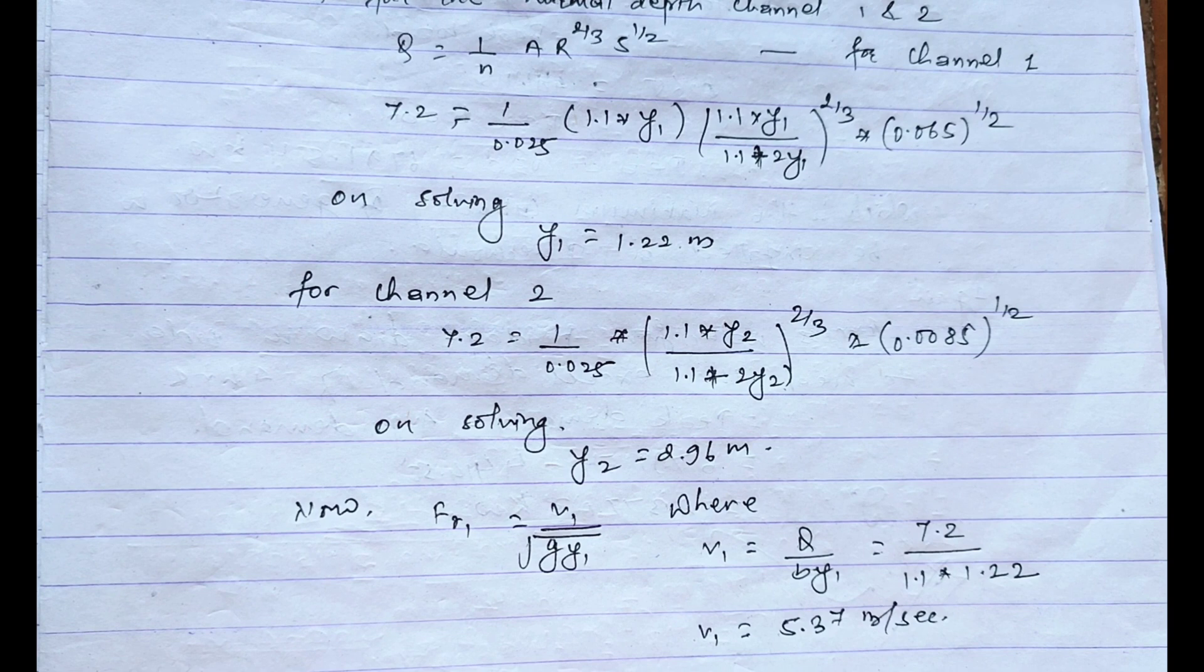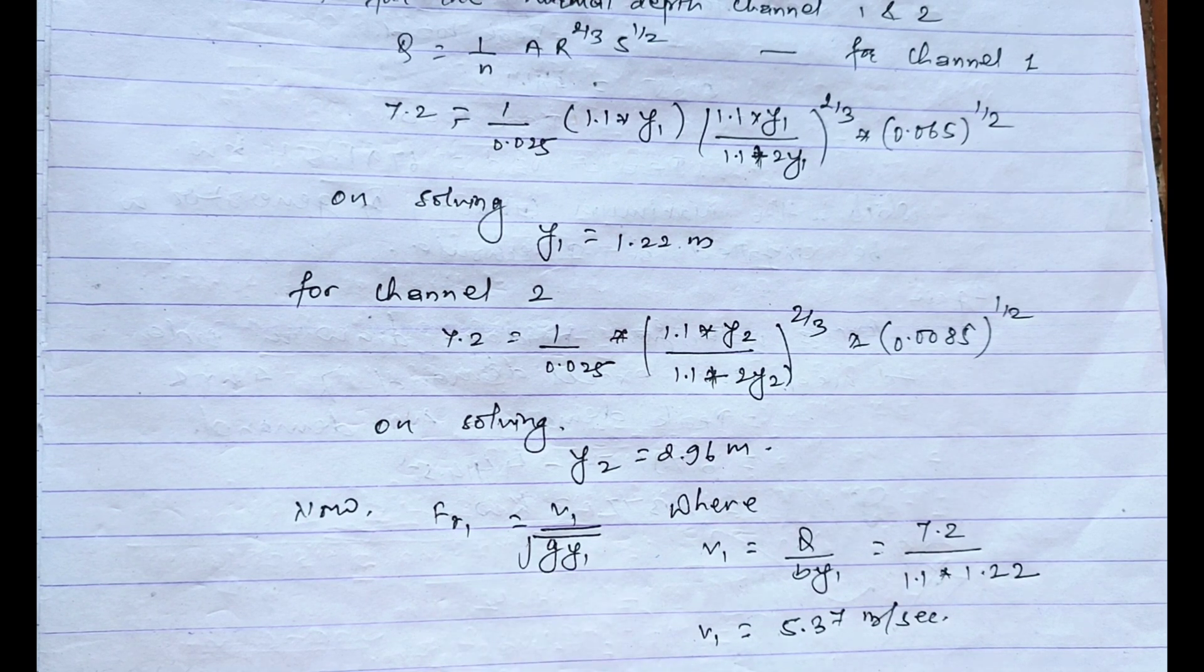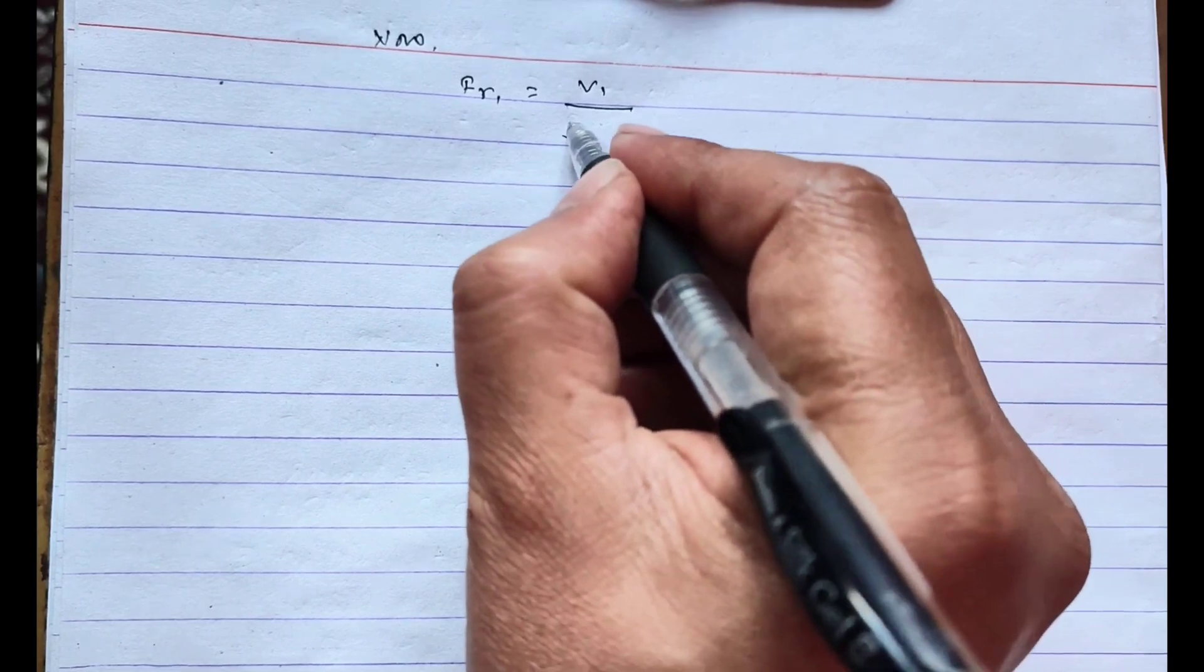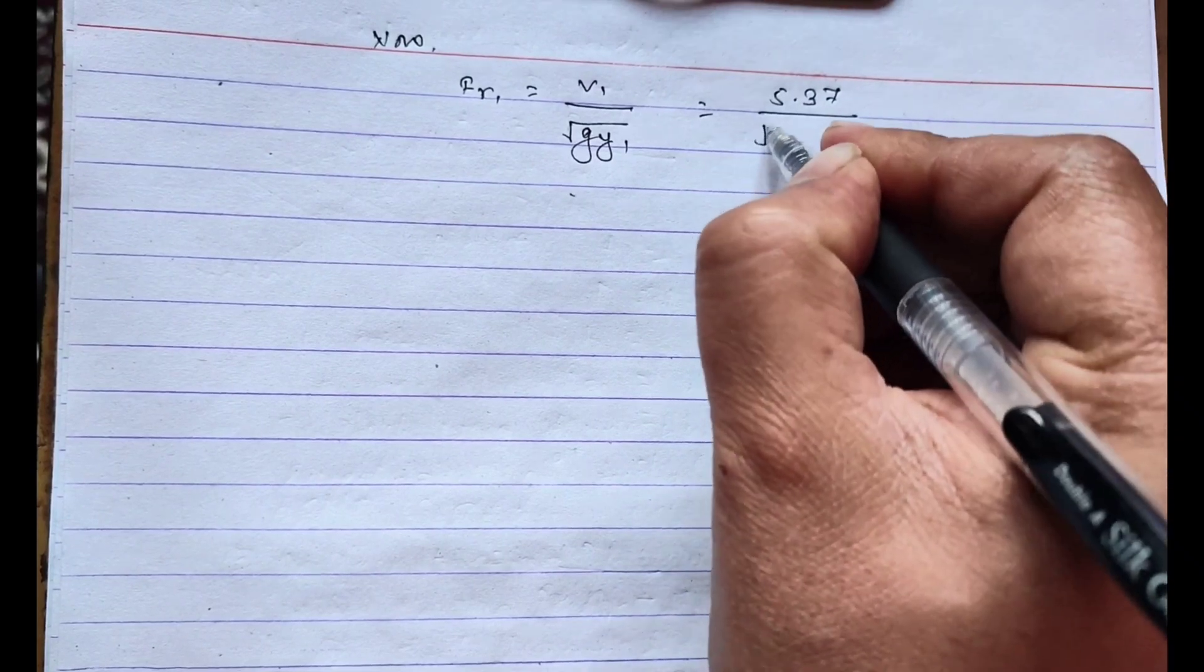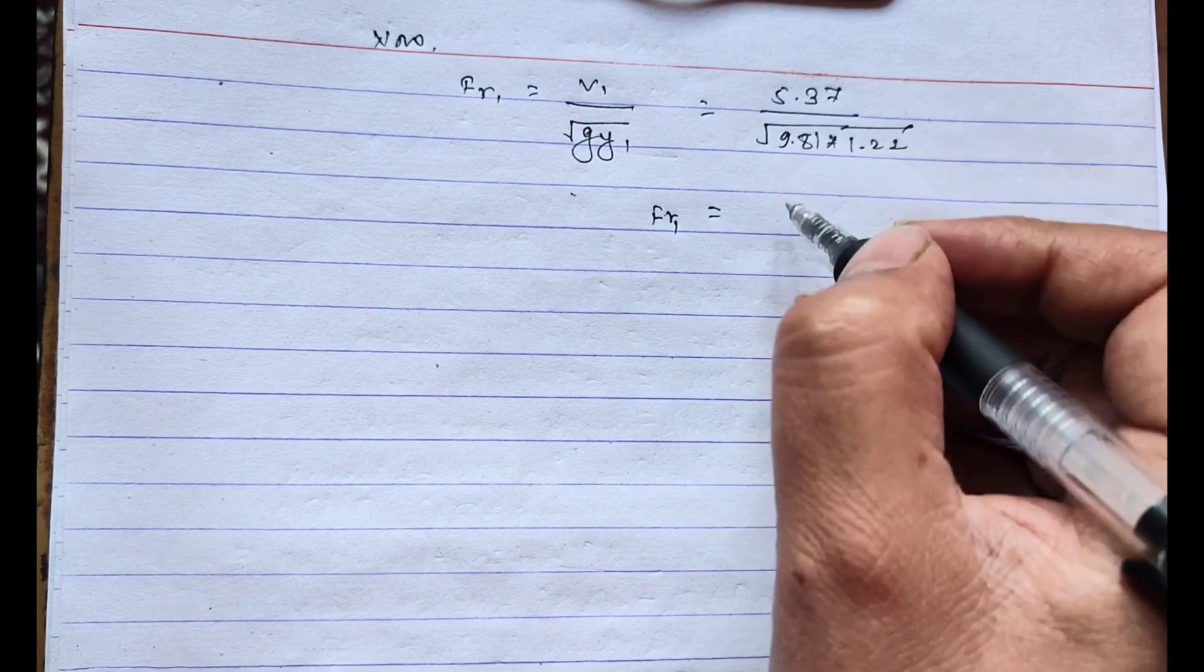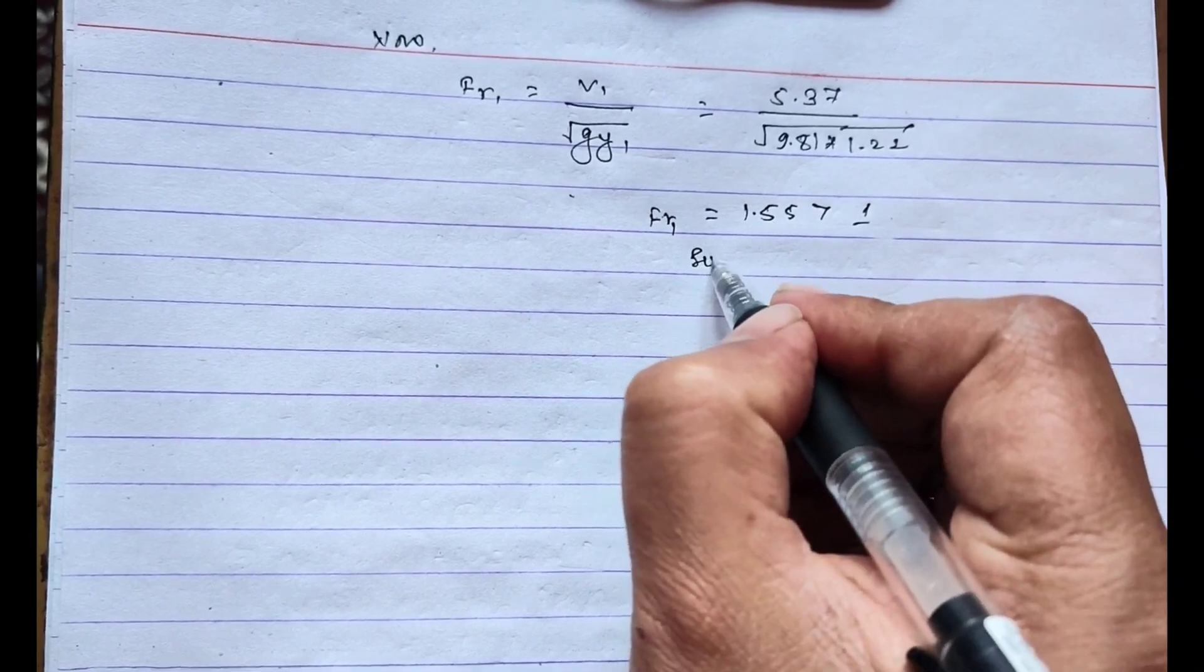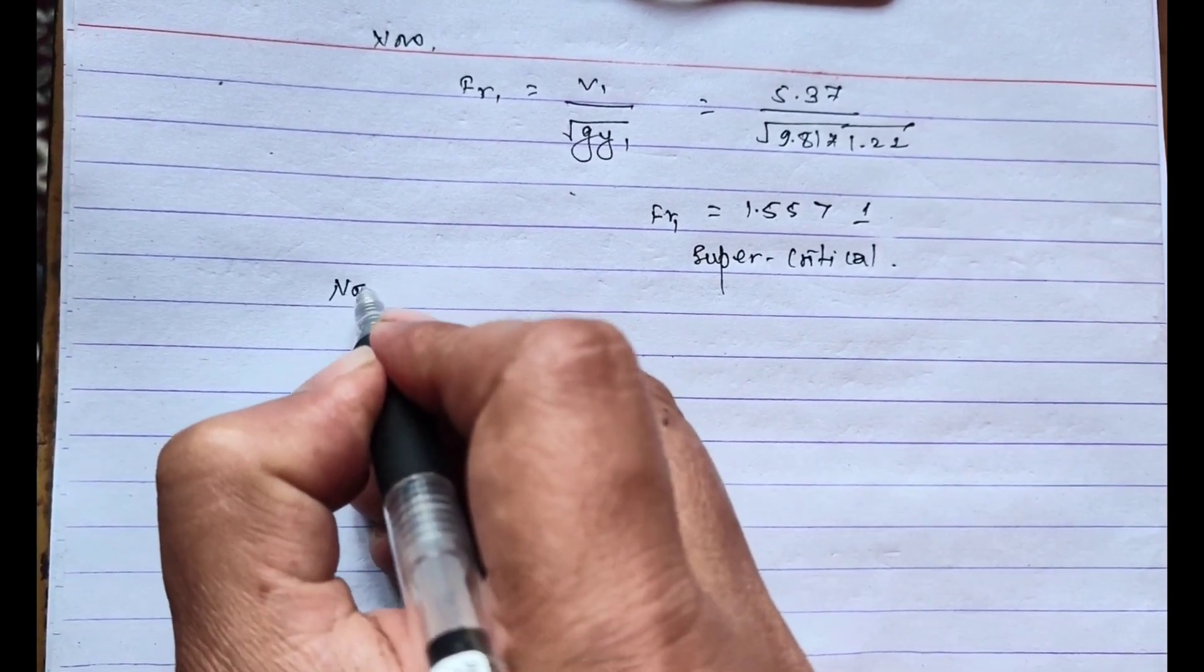On solving this, the value of V1 is 5.37 meter per second. Now placing the value of V1 in this equation, that is Froude number Fr1 equals V1 by root over g y1. V1 is 5.37 divided by root over 9.81 times 1.22. On solving this, the value of Fr1 will be 1.55, which is greater than 1. In this condition, the flow will be supercritical.